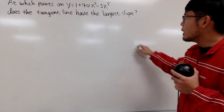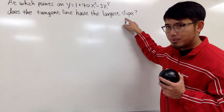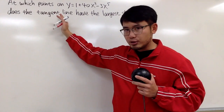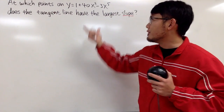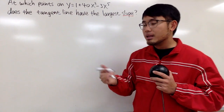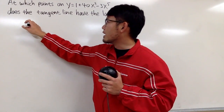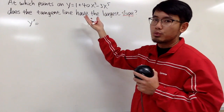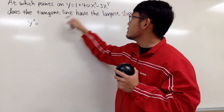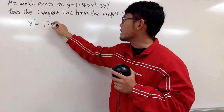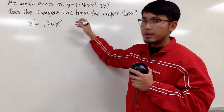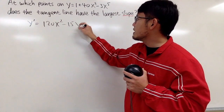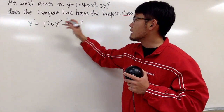First of all, we're looking for the biggest slope. How can we get the slope of the tangent line? We will have to differentiate this one time. We know y', which is the derivative — using the power rule: the derivative of 1 is 0, the derivative of 40x³ is 120x², and the derivative of -3x⁵ is -15x⁴.